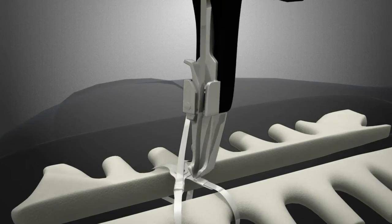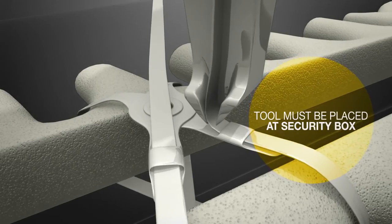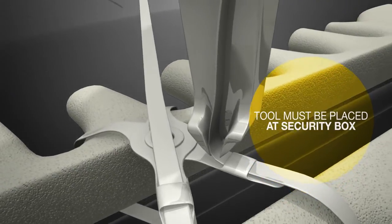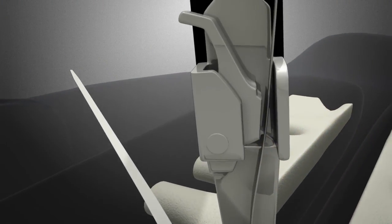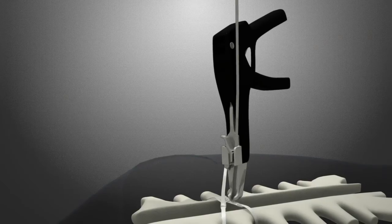The clamp at the end of the strap is controlled with one hand as the tool is placed onto the strap. The tensioning tool is kept at the security box and the strap is placed in the tensioning mechanism. By keeping your hand together and in alignment, the strap will remain in the mechanism.